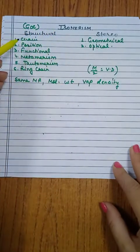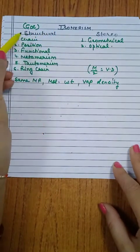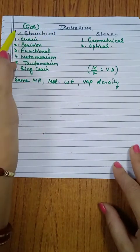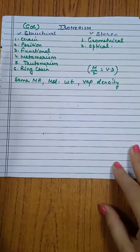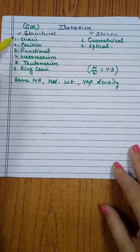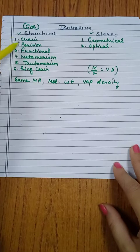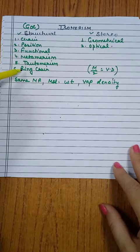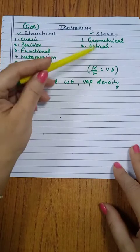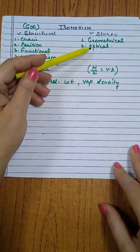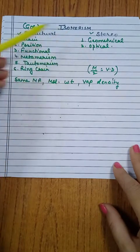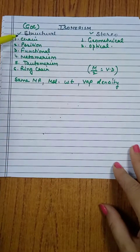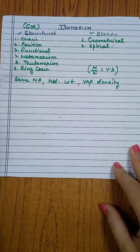When we talk about isomerism, there are basically two types: structural isomers and stereoisomers. Under structural isomerism we will discuss chain, position, functional, metamerism, tautomerism, and ring-chain isomerism. Under stereoisomerism we will talk about geometrical and optical isomers in different videos. Today we will discuss chain and position isomers.